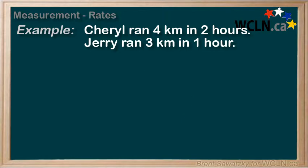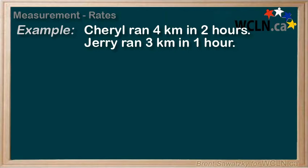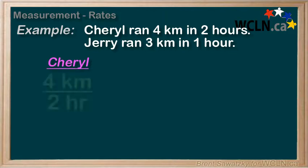Now, when dealing with rates, the values have different units, and therefore they're relevant. Let's go back to our situation with Cheryl and Jerry, but in this case we have some times involved. If Cheryl ran 4 kilometers in 2 hours, we could discuss the fraction 4 kilometers over 2 hours, and we see that these values have different units. Therefore, this is not a ratio — we would call it a rate.